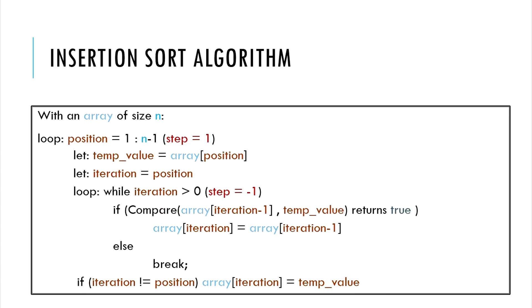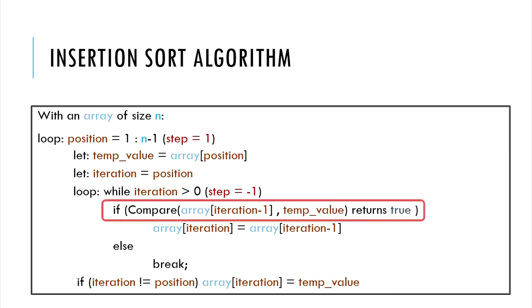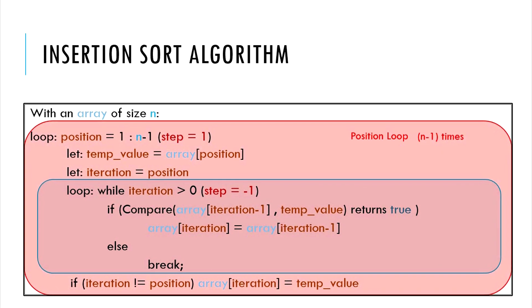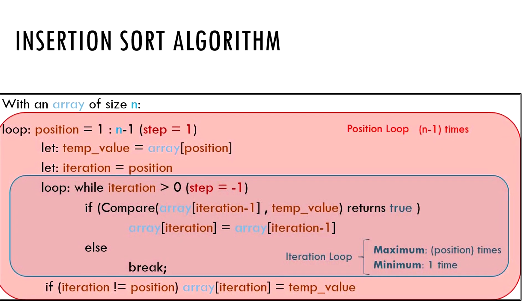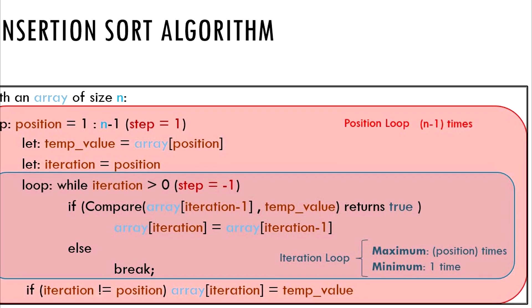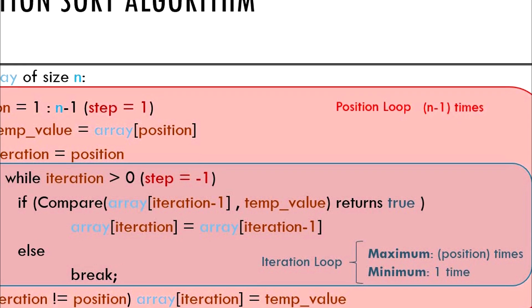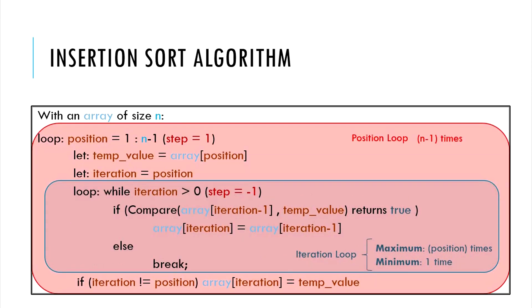If we were to generalize this algorithm, it would look like this. Notice how we replaced the greater-than comparison with a more abstract compare function. The compare function could now incorporate multiple sorting criteria — for example, if the cards were of different suits. The outer loop is the position loop, which runs n-1 times. The inner loop is the iteration loop, which will run a maximum of position times, if we need to go back all the way to the 0th index. The minimum time this loop will run is 1 time, when the element at the current position is already greater than the element at position minus 1.